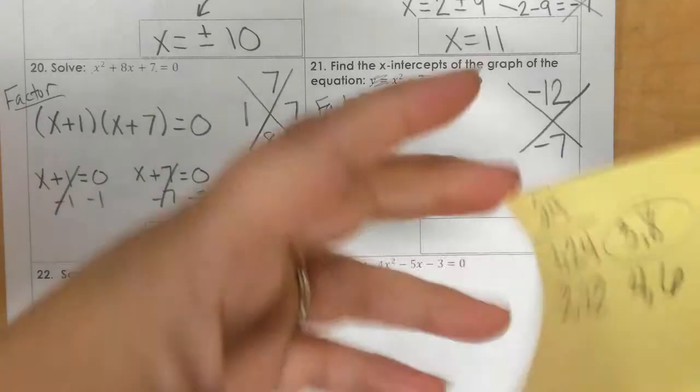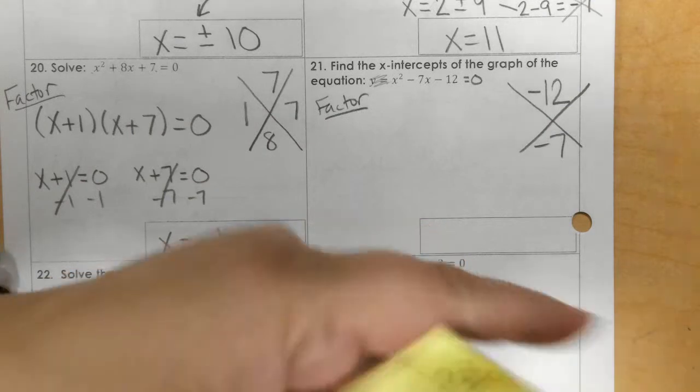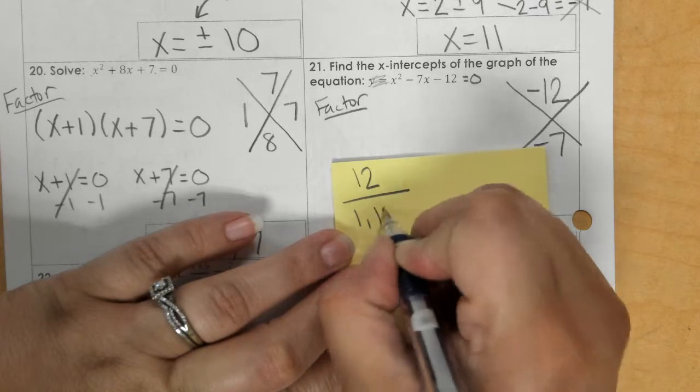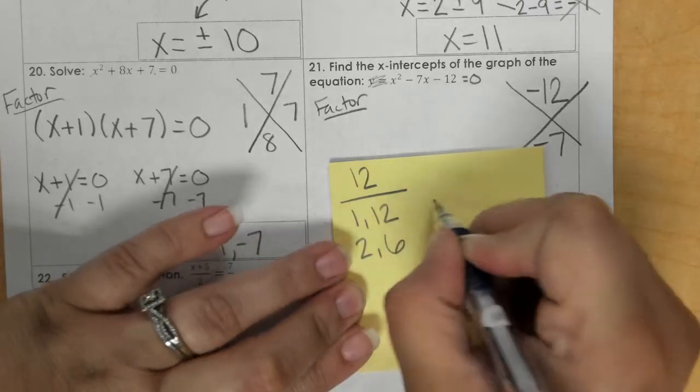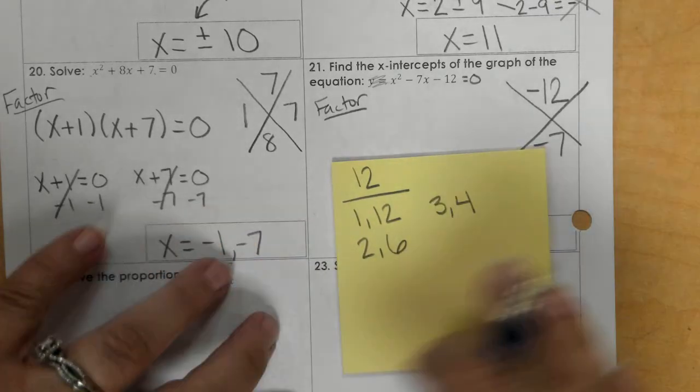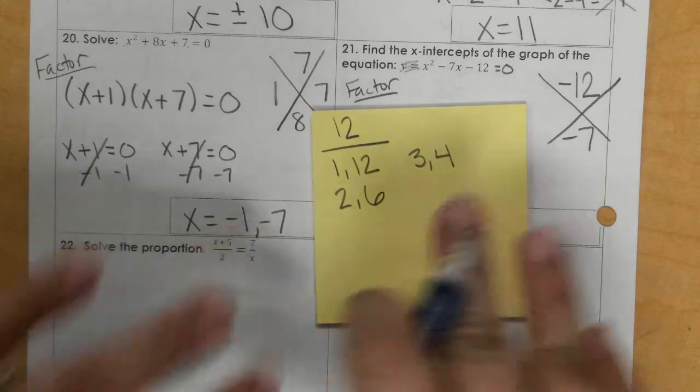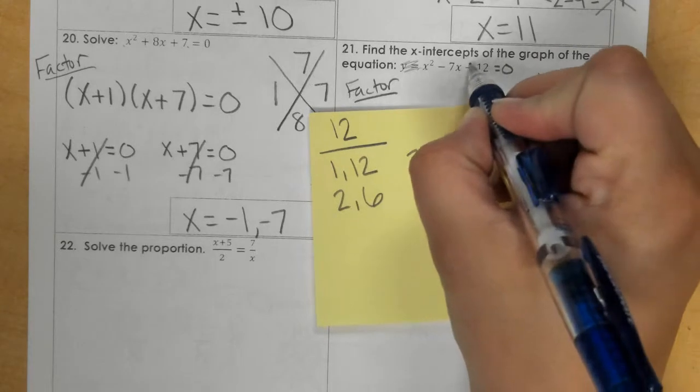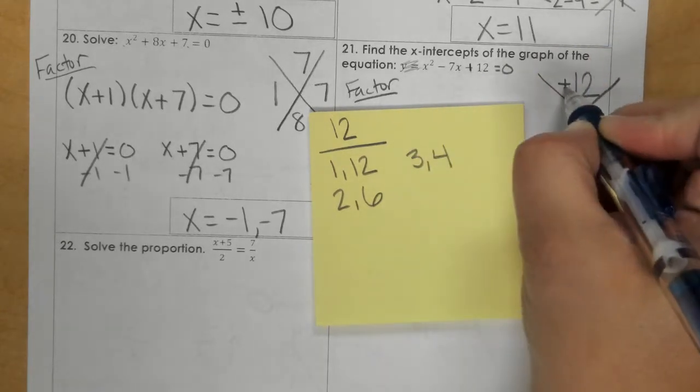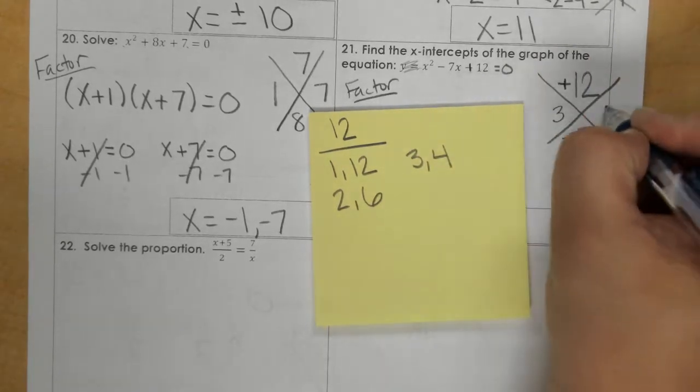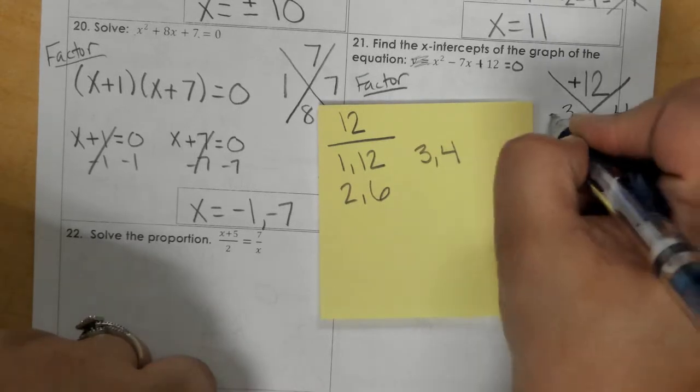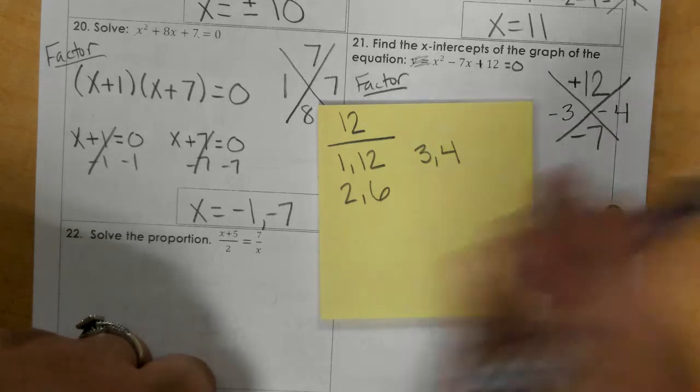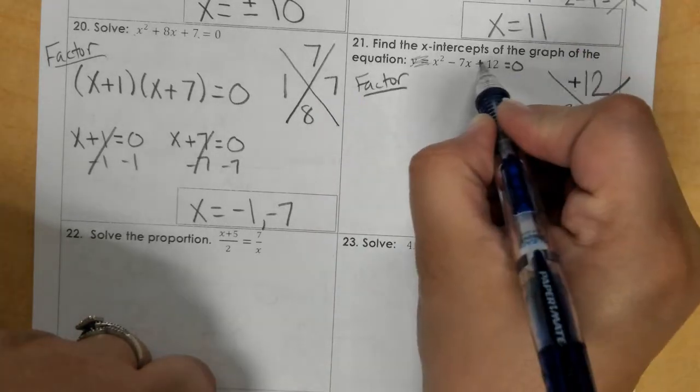Let's see. Factors of 12 are 1 and 12, 2 and 6, 3 and 4. So it looks like to me there's a typo here. This should be a positive 12. And we would have a negative 3 and a negative 4 to get negative 7. But if I multiply, I get positive 12. So let's fix that typo and make that a positive 12.